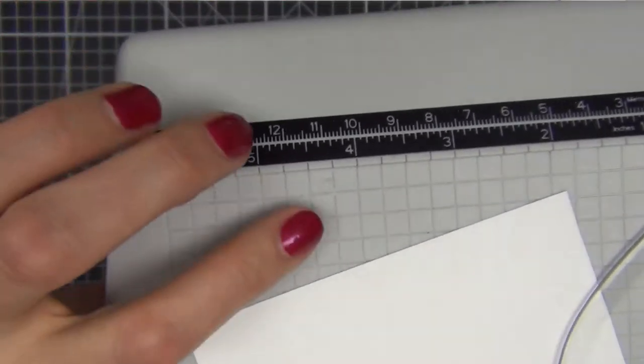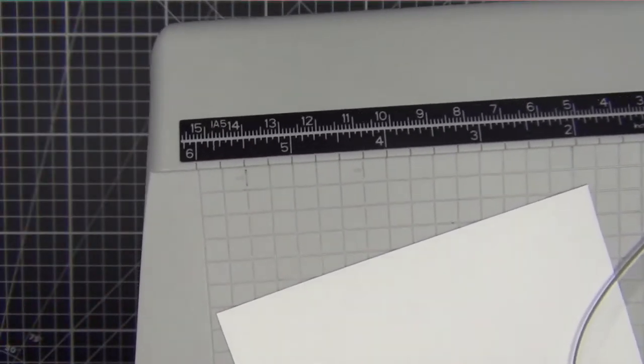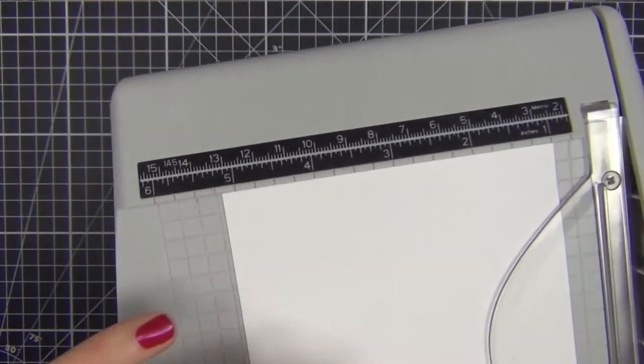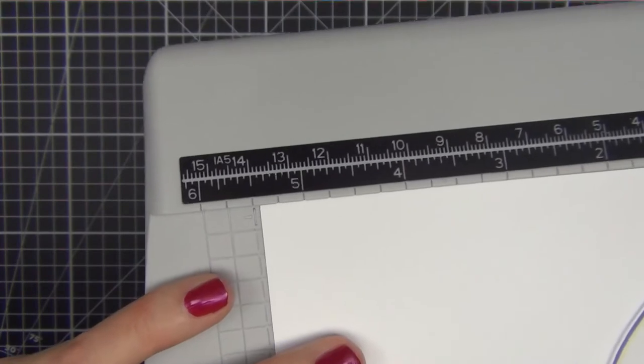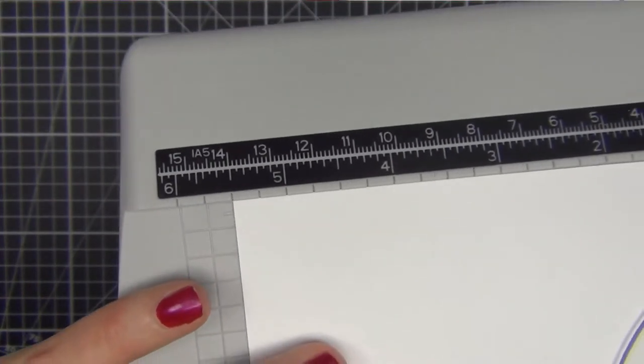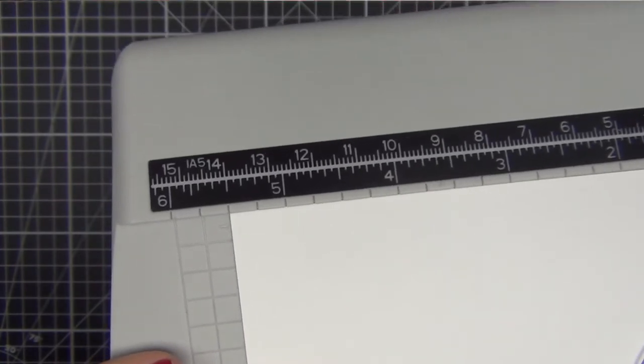So you'll see here that the 4 1/4 and 5 1/2 marks are dashed and that's again just for easy measuring. Because of that, I thought that you just butted it up right against that little arrow and it'd be great. Turns out, that is not what you want to do.